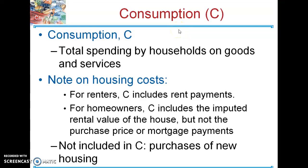The private consumption component, or C component of GDP, is the largest component in the United States, accounting for about 70% of the United States economy. So most items, if you think about it, would go under private consumption. So you buy a pizza — even educational services are seen as private consumption.